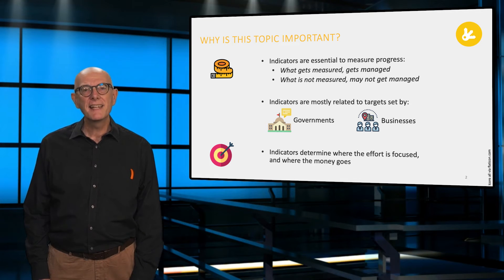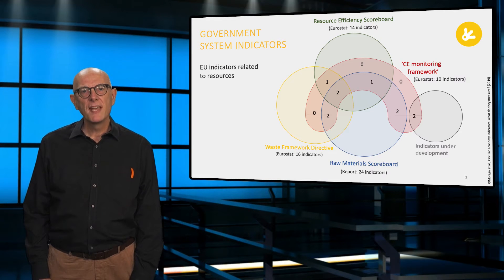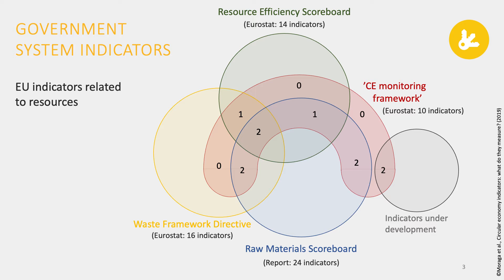Now let us look at governmental indicators. You can see how comparability with other countries is usually tackled. This is done via statistical officers in a country or a region using their own data. This often links to aspects such as per capita or in financial terms. The EU indicators which are related to resources link to regulations or directives, scoreboards or frameworks. In this model you can see the interaction of the indicators from the circular economy monitoring framework and other European directives.